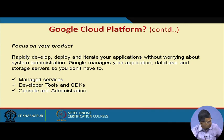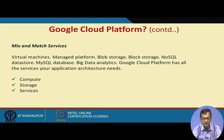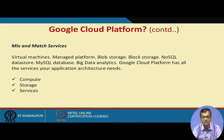Other aspects include a mix and match of services. You have virtual machines, managed platforms, blob storage, block storage, NoSQL datastores, MySQL databases, and big data analytics. Google Cloud Platform has all the services your application architect needs. You can have a number of services and mix and match them to develop or launch your applications, with compute, storage, and services as the core.